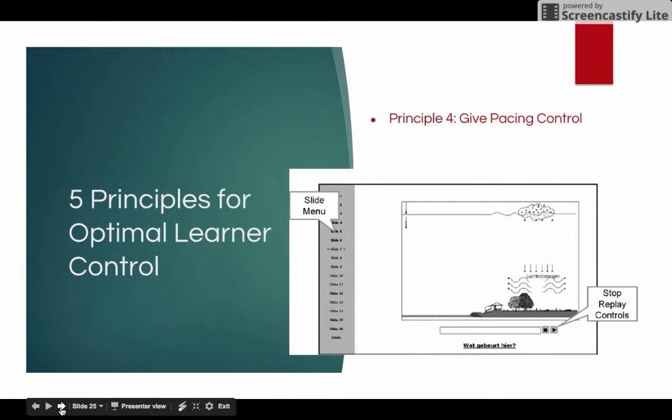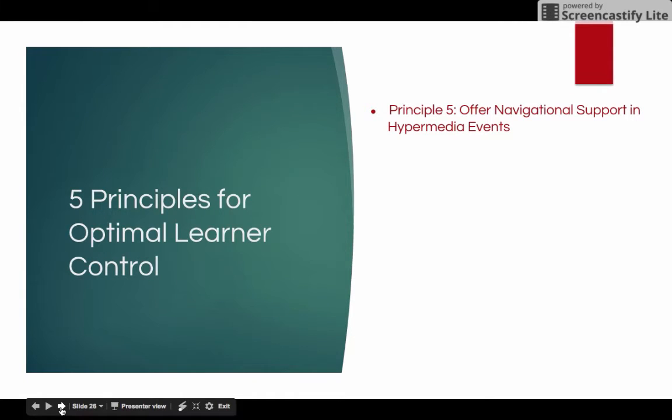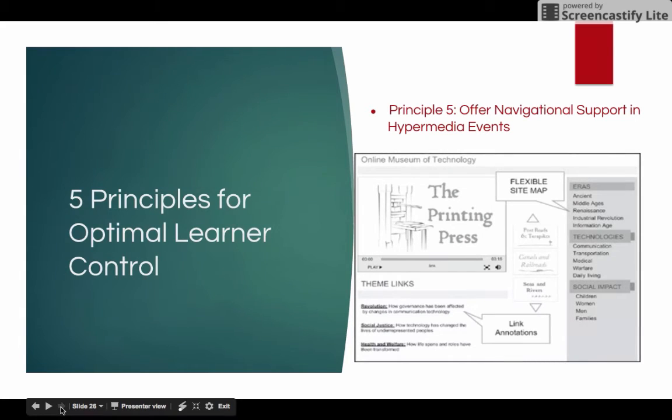The last principle for optimal learning control is to offer navigational support in hypermedia events. If we look at the example over here, it's really laid out for the learner to choose eras in which they see the online museum of technology. The heading up here breaks it down. You have technologies and then a little subgroup and then social impact. This provides easy accessible links for students and they can easily see what they need to choose. Down here they have link annotations that students can click on to give them the content they need. Those are the five principles to optimize learner-controlled asynchronous environments.